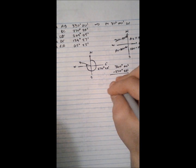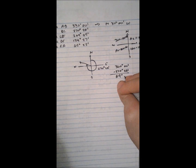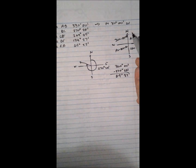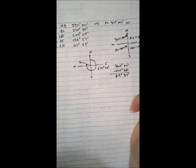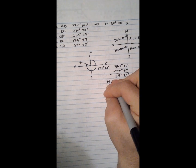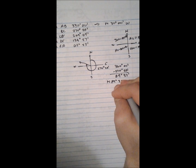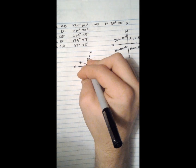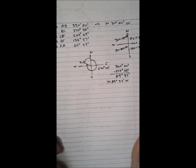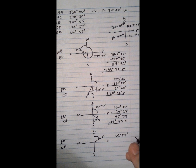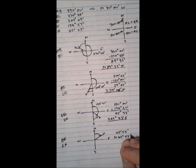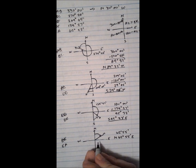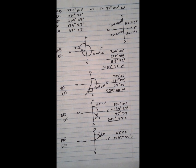The next one we're going to find is the bearing angle of CD. The azimuth is about 209 degrees, placing us in the southwest quadrant. So we use azimuth minus 180. Our azimuth for this one is 209 degrees, and now we've got to fill this in with our numbers.